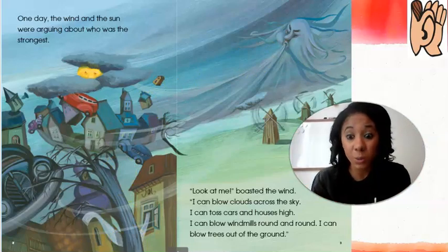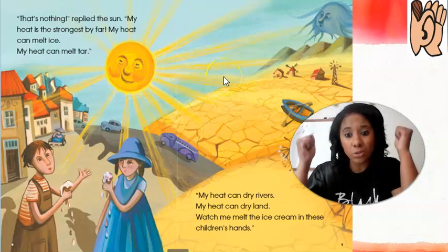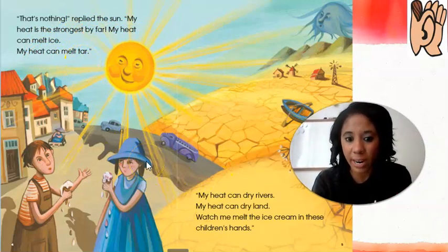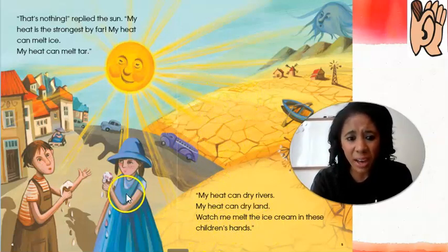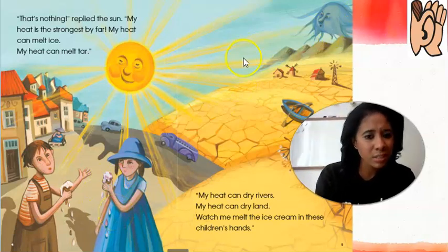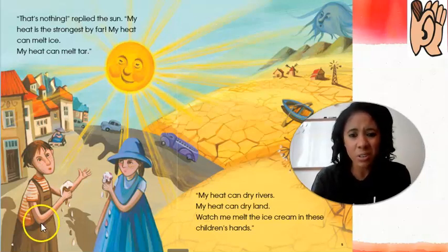During this part of our story, this was talking about the sun and how the sun thought the sun was the strongest. The sun said it's the strongest because it can melt ice, it can melt tar — which is what we drive on — it can heat and dry rivers and dry land. That's why the land is all cracked. It says it can melt the ice cream in the children's hands. So the wind is looking at the sun saying, 'Wow, you are pretty strong.'